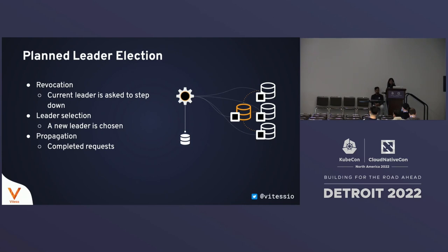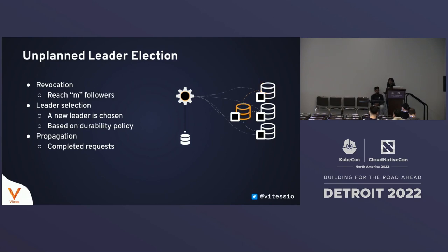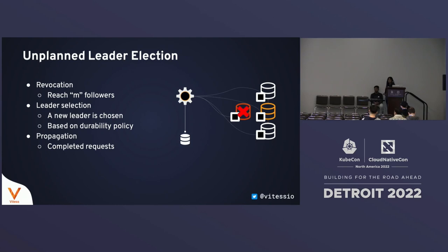In a planned leader election, the leader changes and the replication arrows all move over to the new leader. An unplanned leader election is different because to revoke the leader, we have to reach a sufficient number of followers — we call that M. Once revocation is complete, a new leader is chosen — how depends on the durability policy — and completed requests must be propagated. All replicas now replicate from the new leader, and the previous leader is out of the topology.